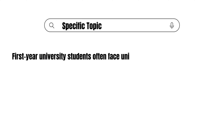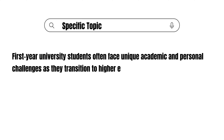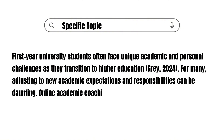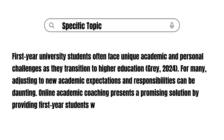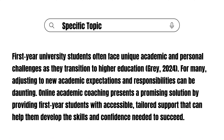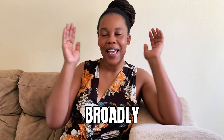After establishing the general context, you want to introduce the specific area you are focusing on — this is where you narrow the topic. In our case, we focus on the unique experiences of first-year students. For example: 'First-year university students often face unique academic and personal challenges as they transition to higher education. Online academic coaching presents a promising solution by providing first-year students with accessible, tailored support that can help them develop the skills and confidence needed to succeed.'